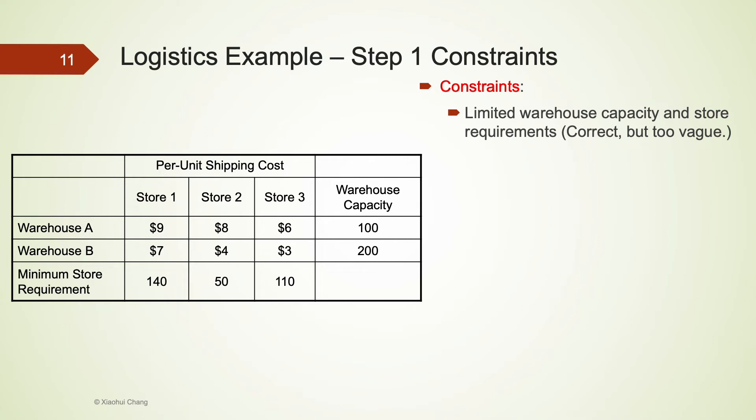Now, we are at the last part of step 1. We have to state the constraints. We do know that there are limited warehouse capacity and minimum requirements. Well, these are correct, but rather vague. Any way that we can represent this information using mathematical models?